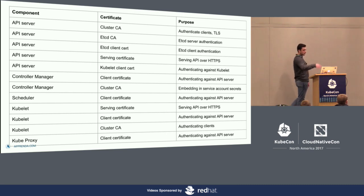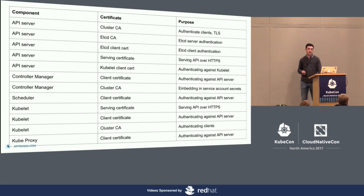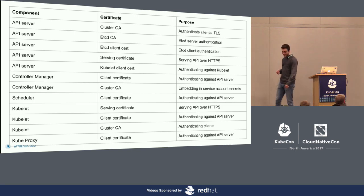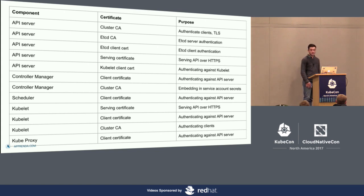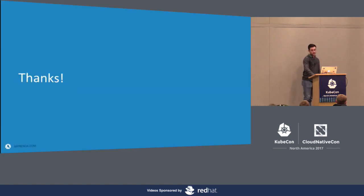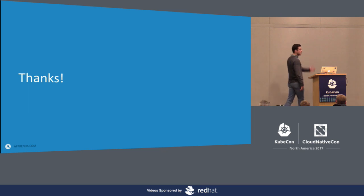This is a quick table that gives you an idea of all the certificates in use in a Kubernetes cluster at the component layer — the API server, controller manager, scheduler, kubelet, and kube-proxy. I hope this gives you an idea of how important certificates are and how careful you have to be with them. You don't want to get paged at 2 a.m. when one of these certificates expires and your entire cluster goes down. I hope that gave you an idea of how certificates work and how they're used in Kubernetes. If there are any questions, I'll be around and happy to take them.